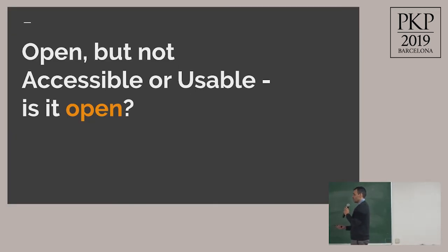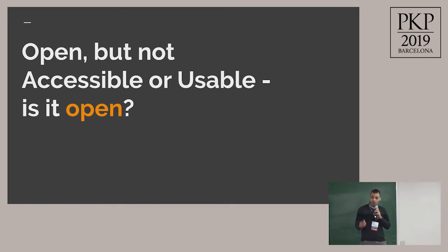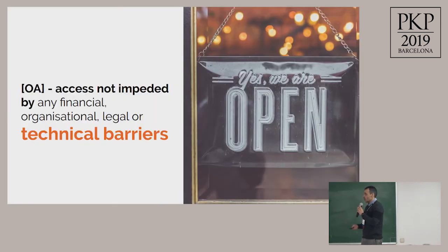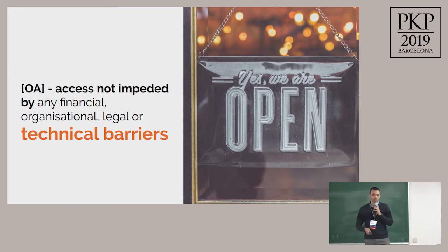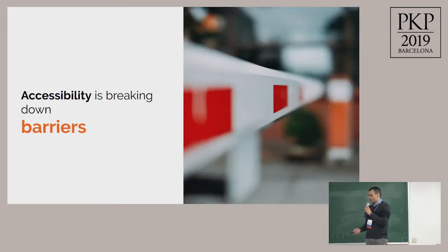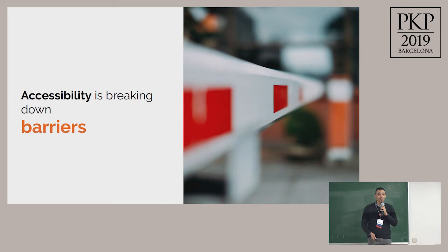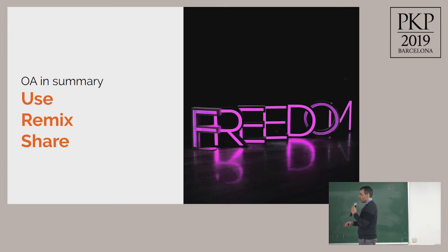But what if it's open but not accessible or usable? Is it really open? My content is open but not accessible — let's review. What is open access? It's content not impaired by any financial, organizational, legal, or technical barriers. What is accessibility? It's breaking down barriers. So in summary, open access means use, remix, and share content freely.